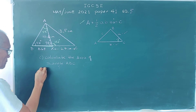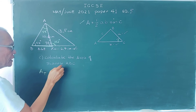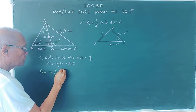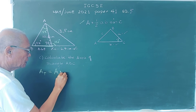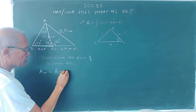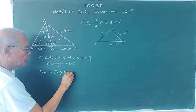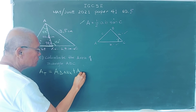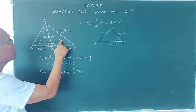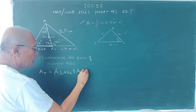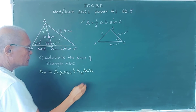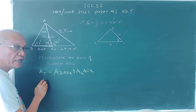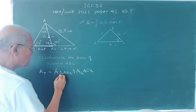The total area of triangle ABC equals the area of triangle ABX plus the area of triangle AXC. We need to find each area separately, then add them together to get the total area.